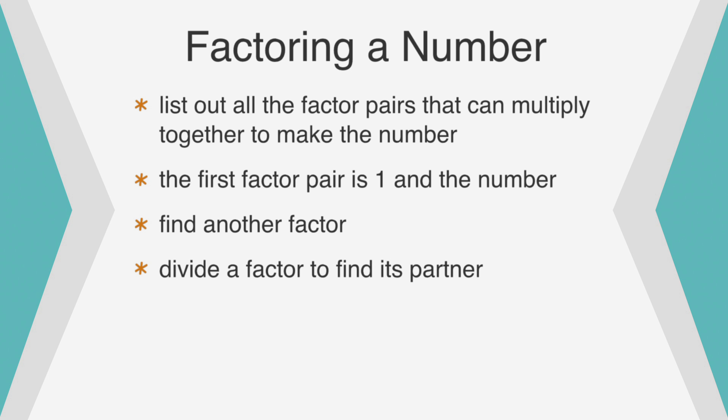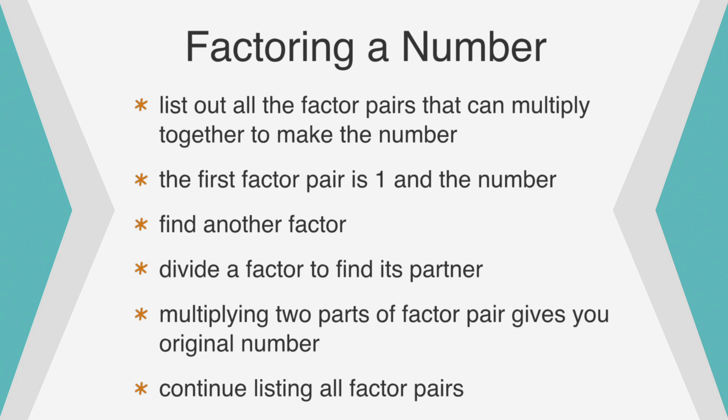Dividing by that factor, we find its partner. These two numbers constitute a factor pair. Multiplying the two parts of any factor pair gives you the original number. Continue listing out factor pairs until you've found them all.